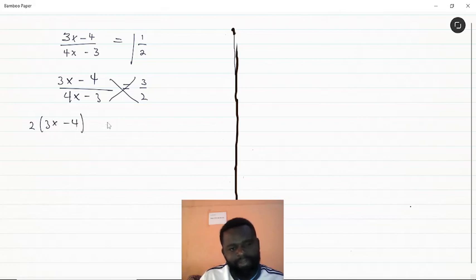equals 3 multiplying 4x minus 3. Then we get 6x minus 8 equals 12x minus 9. That's the expansion.